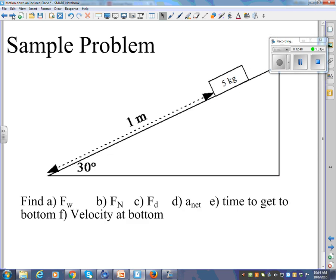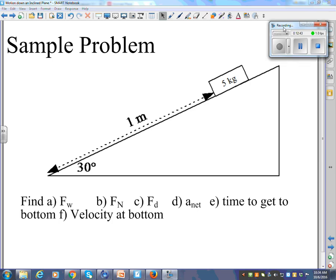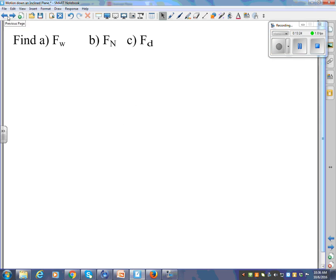Shall we do a sample? We have a 5 kilogram mass at the top of a ramp. The ramp is a meter long. It's a 30 degree angle. There's one more thing we know that's not stated explicitly, which is gravity. So we're going to find the weight force, the normal force, the Fd, the A net, time to get to the bottom, and the velocity at the bottom. Normally you would not get all those steps, but we're going to show you the route to get there.